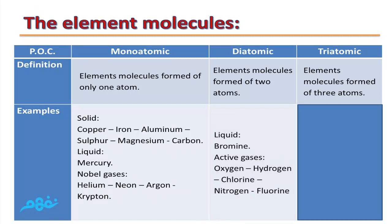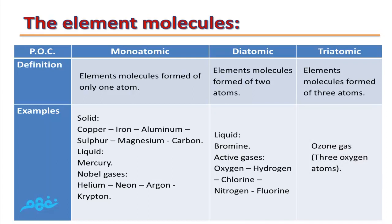Examples for diatomic: liquid such as bromine — bromine is considered the liquid element composed of two atoms. All active gases are diatomic, such as oxygen, hydrogen, chlorine, nitrogen, and fluorine. Triatomic elements such as ozone: this molecule forms the ozone layer which protects us from ultraviolet radiation. Ozone gas consists of three oxygen atoms — O₃.